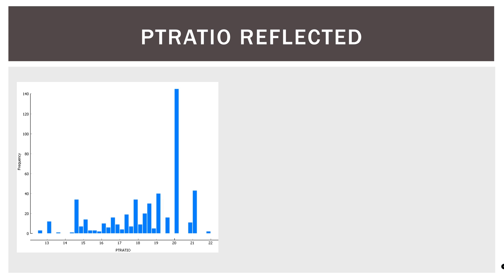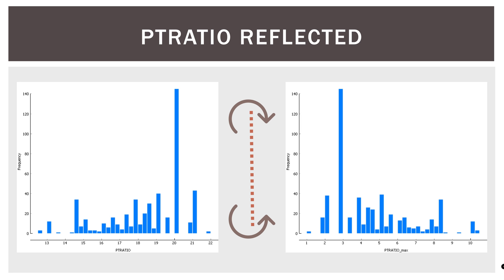Here is the original PT ratio variable distribution. We can see that we have a minimum of about 12 and a maximum of about 22. Again, this is pupil teacher ratio in the Boston data set. After reflection, it looks like this. So reflect, and now it's a mirror image of itself. And we did that just by doing the process in the previous slide.